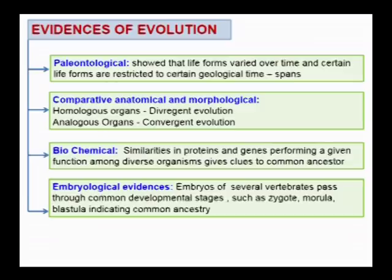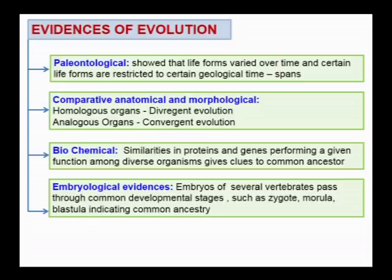Coming to the evidences of evolution of life forms, the important evidences are paleontological evidences, which are based on fossil records. These showed that life forms varied over time and certain life forms are restricted to certain geological time periods. Compared to anatomical and morphological evidences, we have homologous organs and analogous organs.